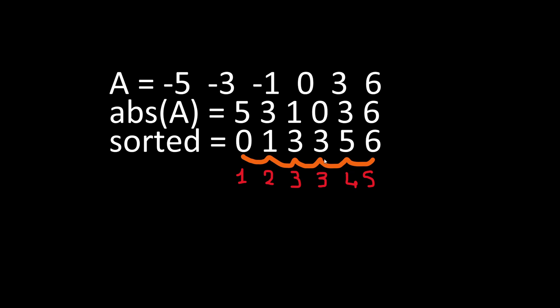Then we have 5 which is different than 3, so our counter is 4. At the end we have number 6 which is different than the previous number, and at the end we have five distinct elements for this example.